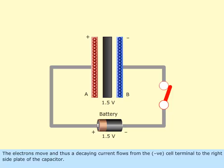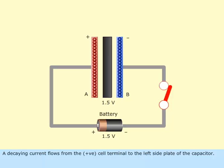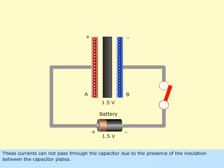The electrons move and thus the decaying current flows from the negative cell terminal to the right side plate of the capacitor. A decaying current flows from the positive cell terminal to the left side plate of the capacitor. These currents cannot pass through the capacitor due to the presence of the insulation between the capacitor plates.